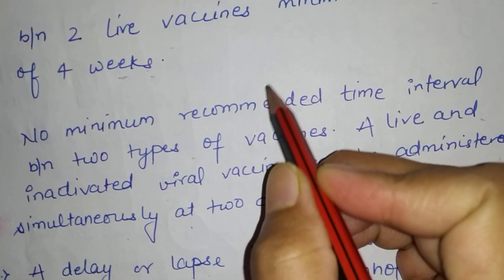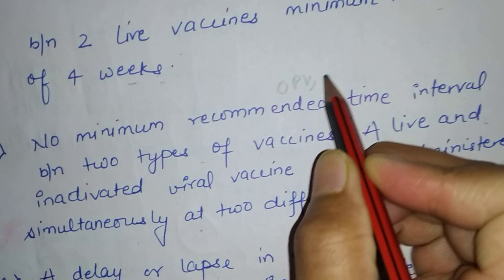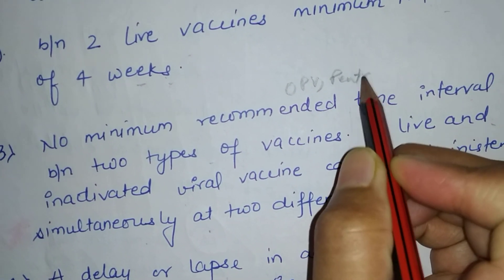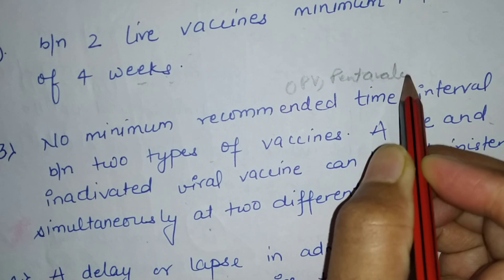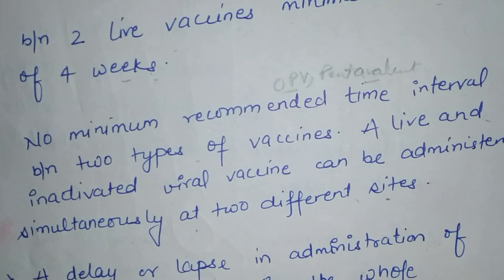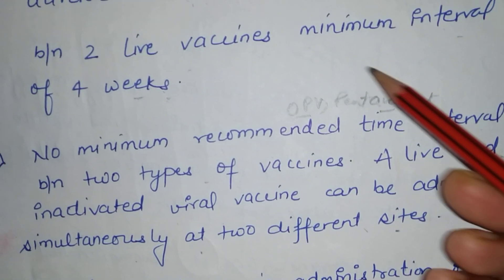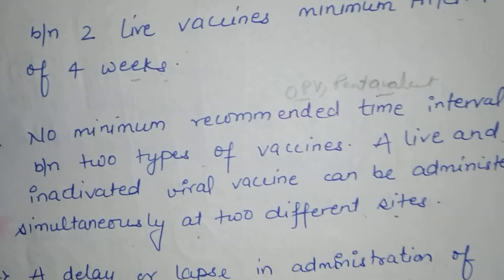For example, OPV is a live vaccine and pentavalent is a killed vaccine — they can be given together, but the sites should be different.